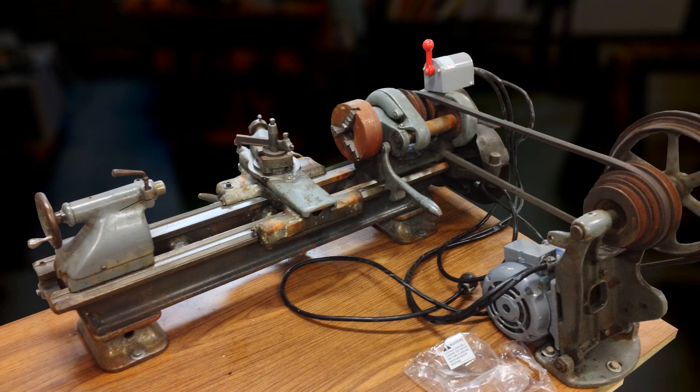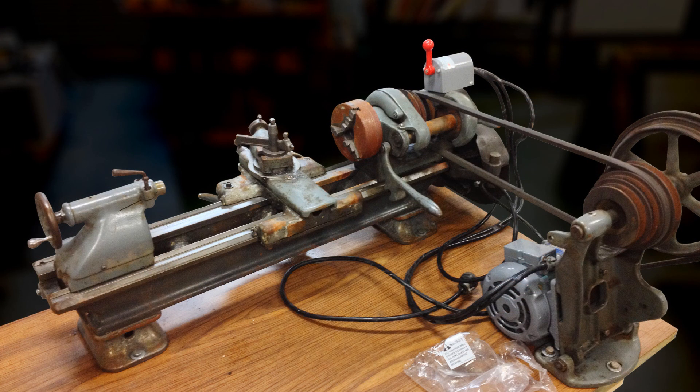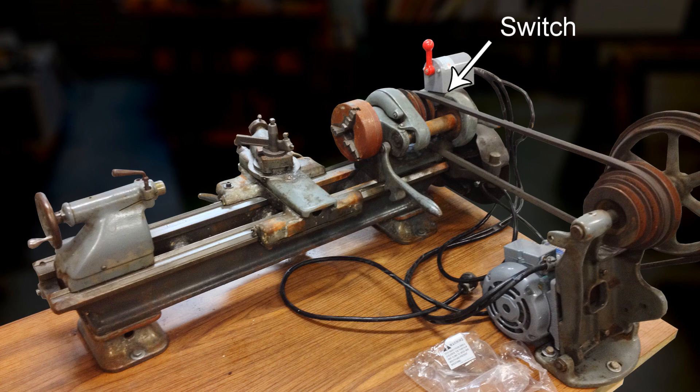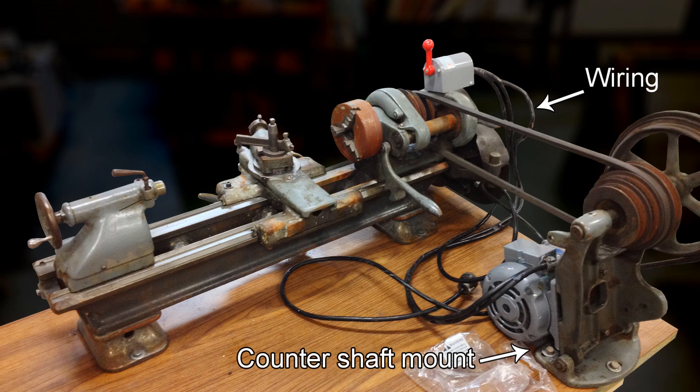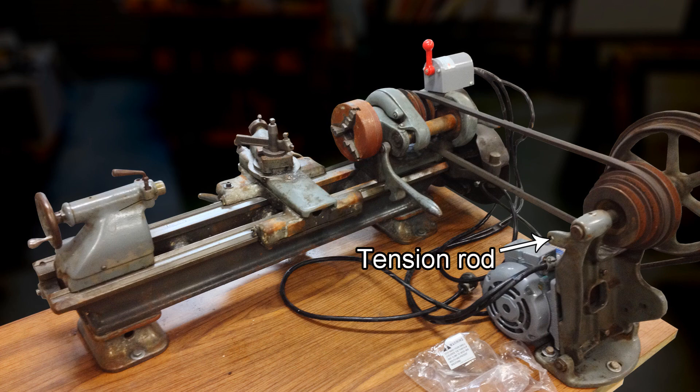Here is the 1937 lathe viewed from the backside. It has several issues such as the switch is mounted incorrectly, the wiring is a complete mess, the counter shaft is mounted too far back, and the tension rod is bent and the turnbuckle was broken.